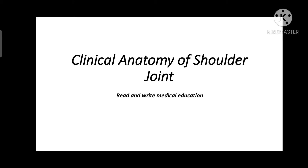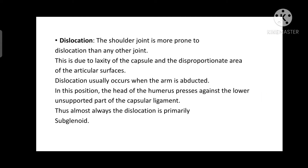Today we are going to study the clinical anatomy of the shoulder joint. The shoulder joint is more prone to dislocation than any other joint, which is due to the laxity of the capsule. Dislocation usually occurs when the arm is abducted, as the head of the humerus faces against the lower unsupported part of the capsule ligament. Thus, the dislocation is primarily sub-glenoid.